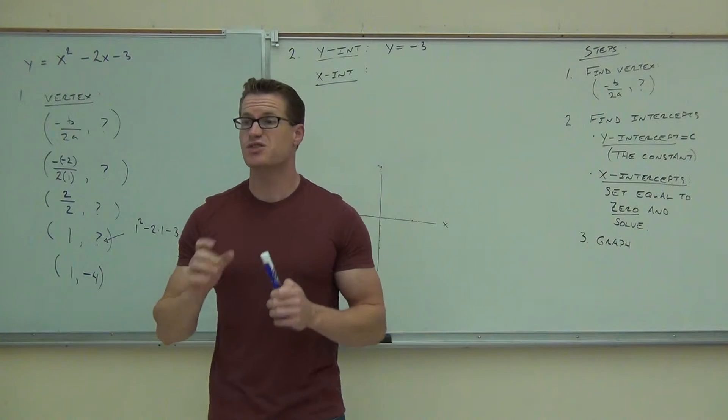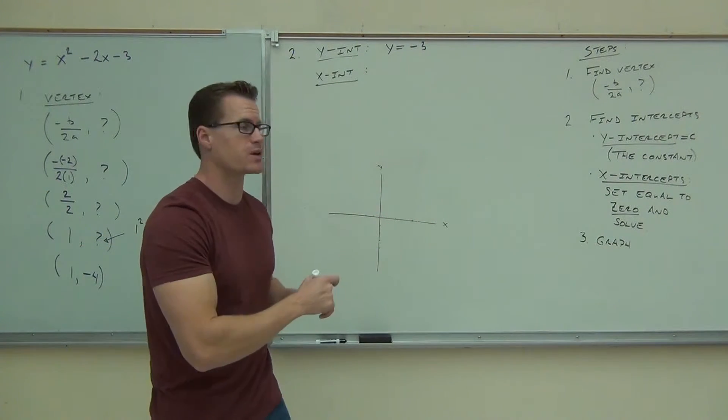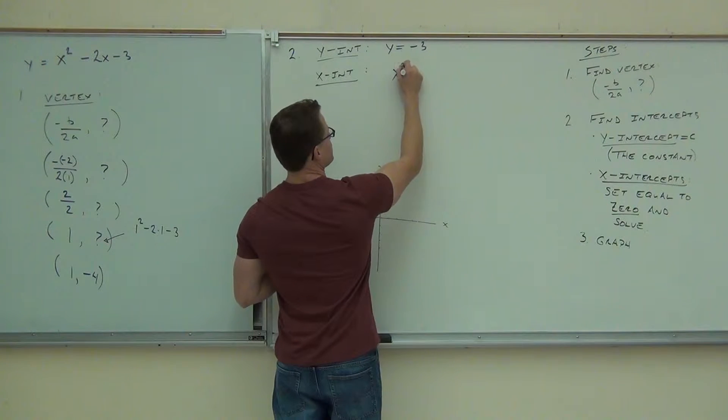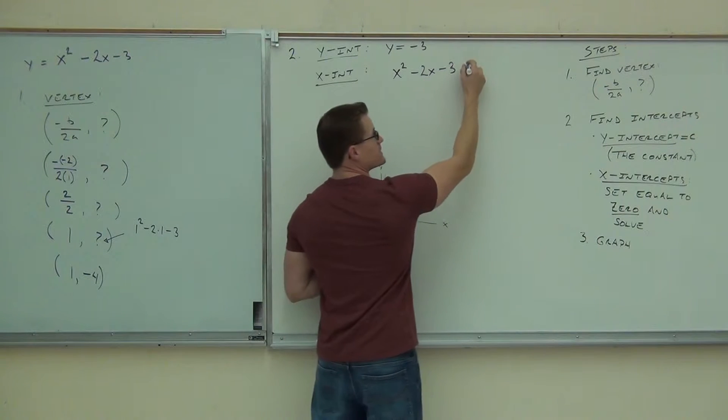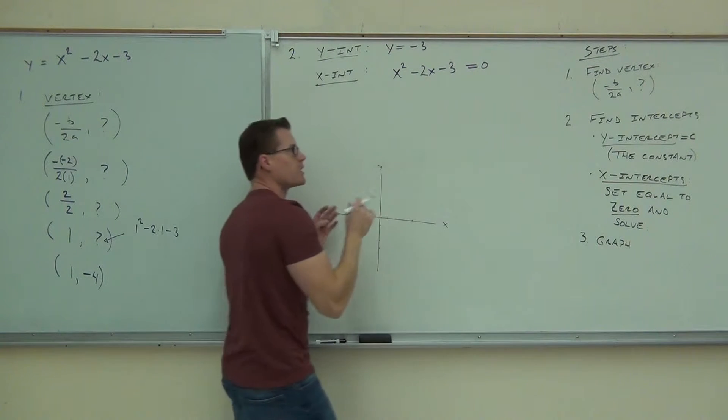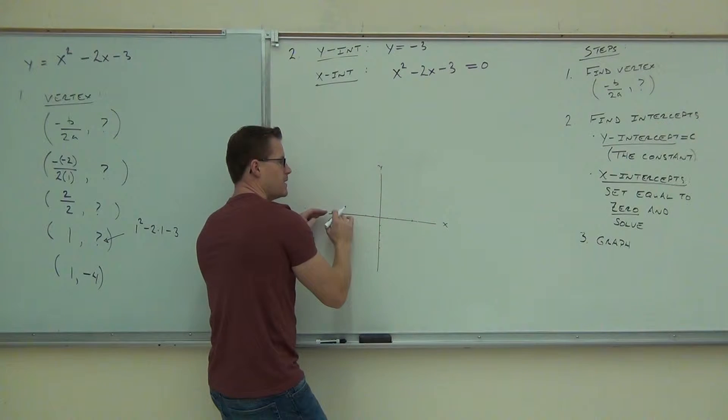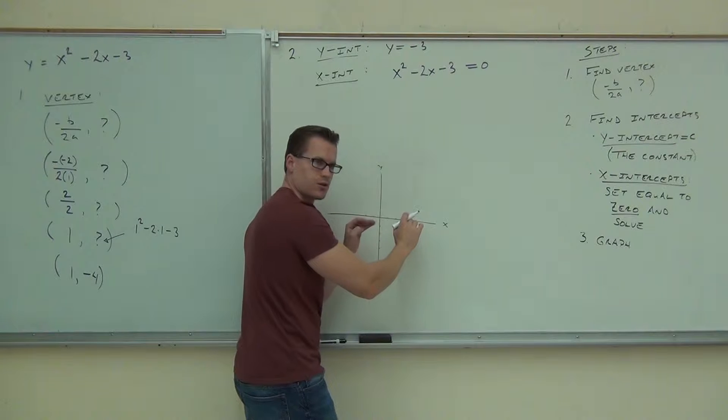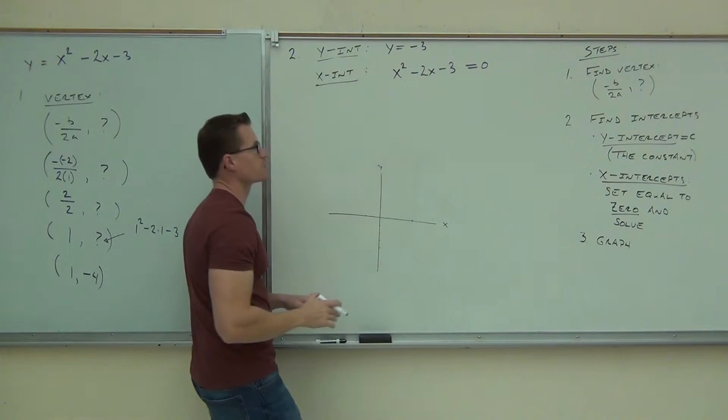So when you're solving the x-intercepts, this really is old stuff. We have literally been doing this the entire semester. You take your original equation, the quadratic part, x squared minus 2x minus 3. We set that equal to zero because what we're trying to do here is find out the values that make the y equal to zero. That means the values where you're crossing the x-axis. Are you following me on why we set that equal to zero? Y level is zero right here. That's where we're trying to find those points.